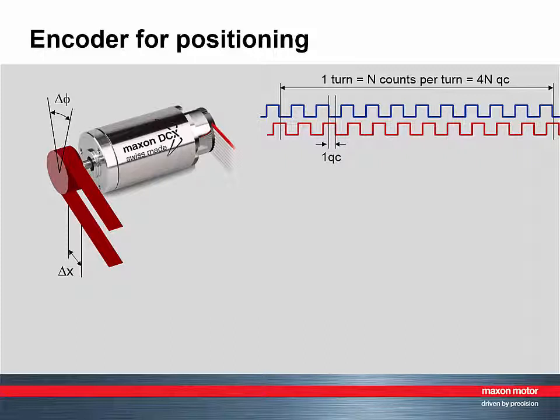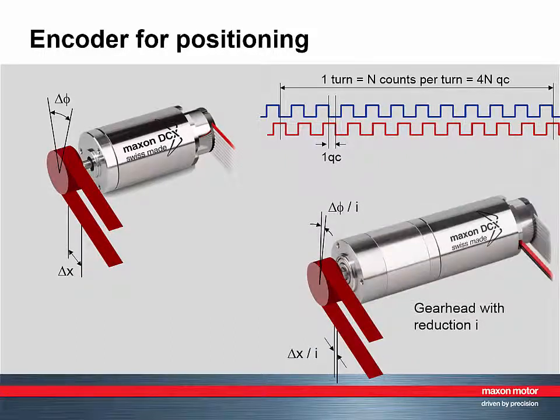an angular accuracy of one degree requires an encoder resolution of at least 360 states per turn or 90 counts per turn. Observe, encoders are mounted on the motor. Any gear head reduction increases the resolution at the load by the reduction ratio of the gear head.